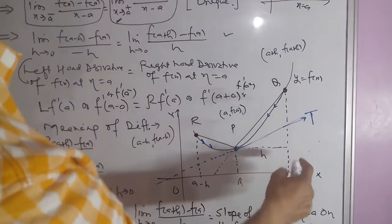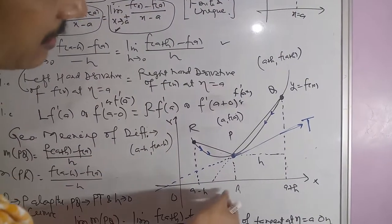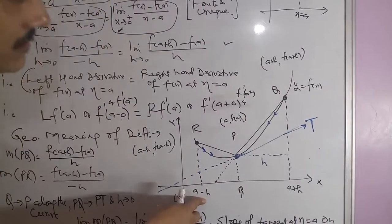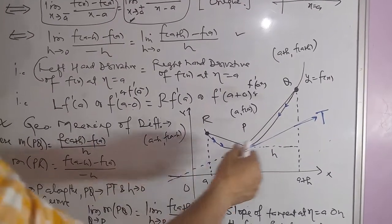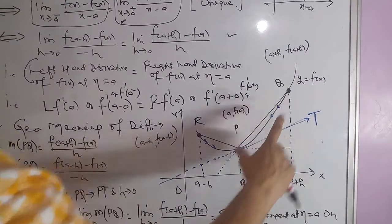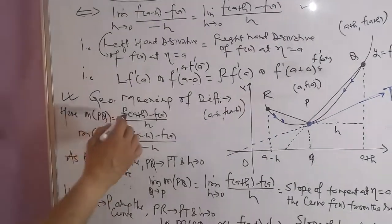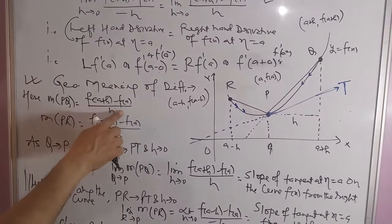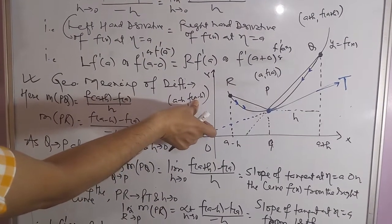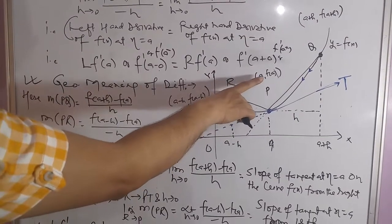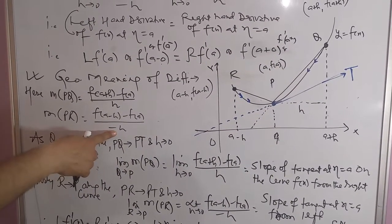We take two neighboring points on the curve, Q and R. On the x-axis, neighboring points of a are a plus h and a minus h. The coordinates of point Q are (a plus h, f(a plus h)), and the coordinates of point R are (a minus h, f(a minus h)). The slope of chord PQ is [f(a plus h) minus f(a)] upon h, and the slope of chord PR is [f(a minus h) minus f(a)] upon [minus h].